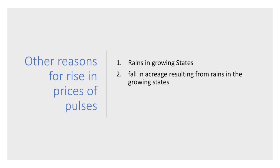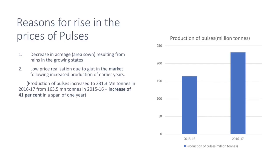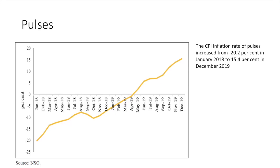Other reasons include rains in growing states, causing a fall in the area sown for pulses in those states. Summing up the reasons for the rise in pulses prices: rains in growing states led to a decrease in area sown, and low price realization by Indian farmers due to high production. According to the survey, between 2018 and 2019, CPI inflation for pulses went from minus 20.2% to 15.4%, moving from the negative zone to the positive zone.